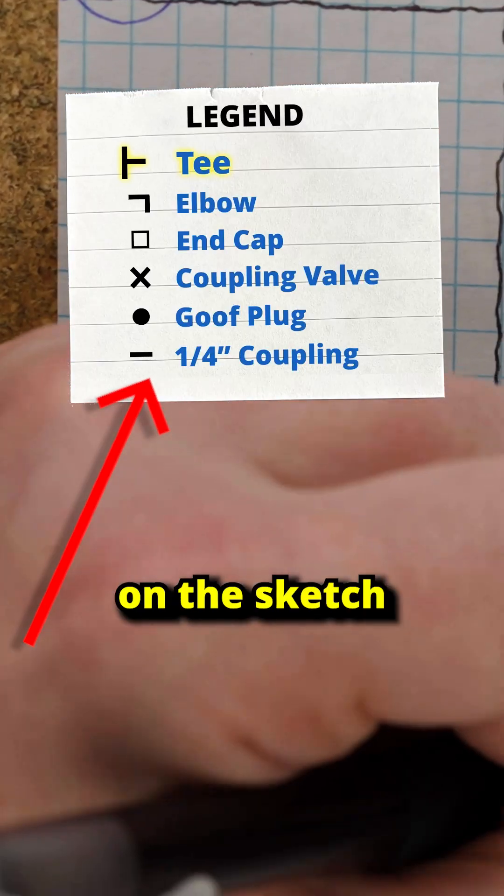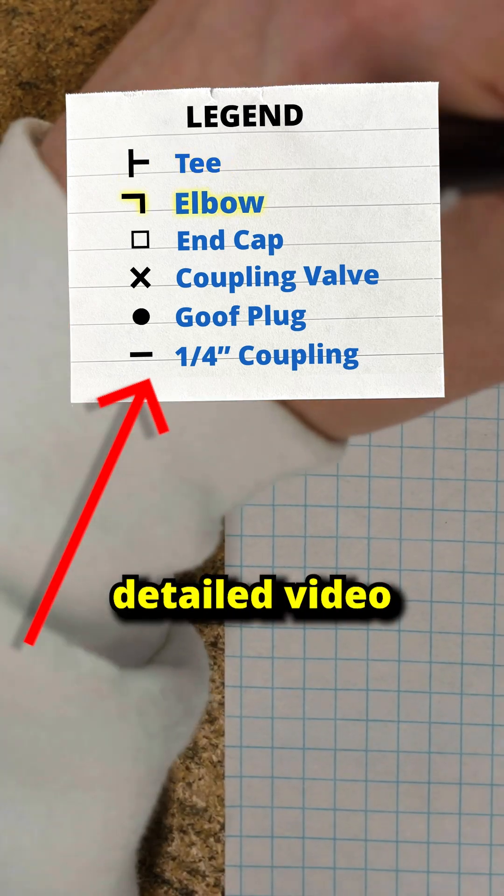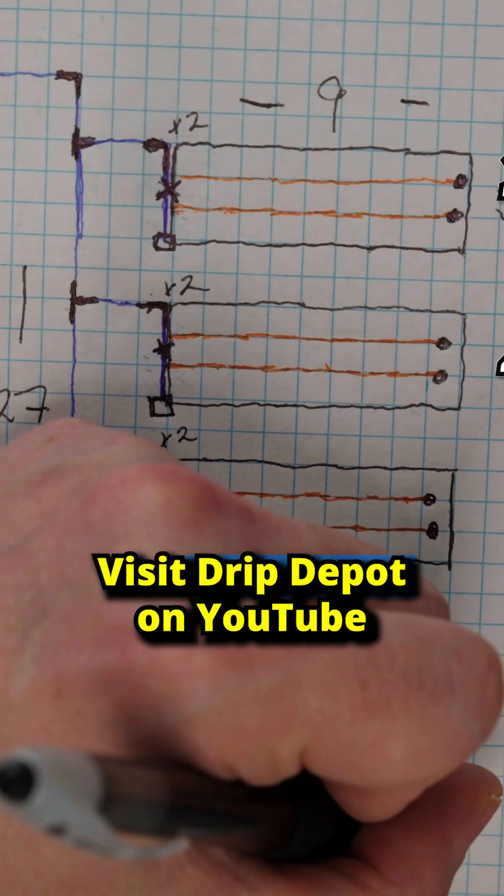Here's a list of all the fittings and symbols I used on the sketch to mark out the system. For a more detailed video on how to design your own drip system, visit Drip Depot on YouTube.